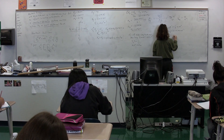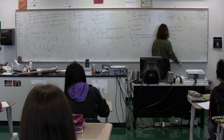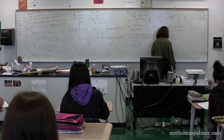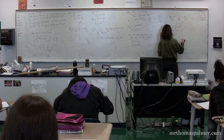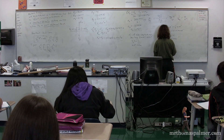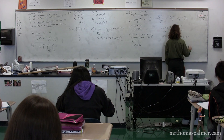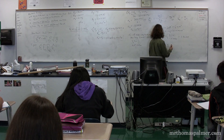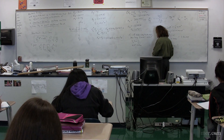Delta t is equal to the square root of 2 times 2 divided by 1.63934.